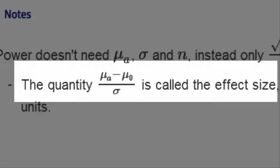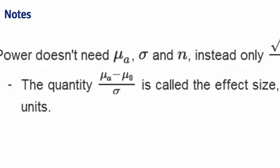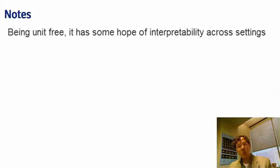So this quantity, the difference in the means divided by sigma, is called the effect size. And what's nice about the effect size is it's unit free. So when you subtract mu naught minus mu_a and divide it by sigma, you get a unit free quantity. And that's why the effect size is very useful, because being unit free, it has some hope of being interpretable across problems.